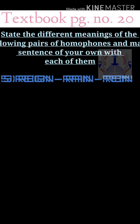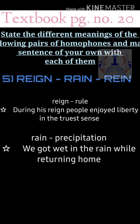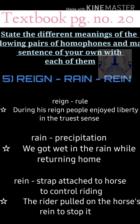Fifth: 'reign' (R-E-I-G-N) means the period of rule of a monarch. Sentence: 'During his reign, people enjoyed liberty.' 'Rain' (R-A-I-N) is the condensed moisture of the atmosphere falling visibly in separate drops. Sentence: 'We got wet in the rain while returning home.' 'Rein' (R-E-I-N) means a strap attached to a horse's bit to control it. Sentence: 'The rider pulled on the horse's rein to stop it.'